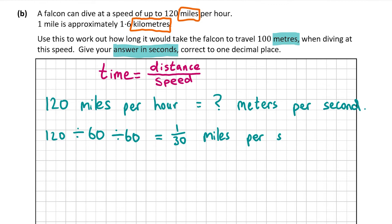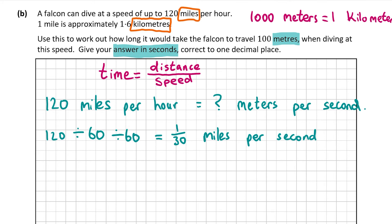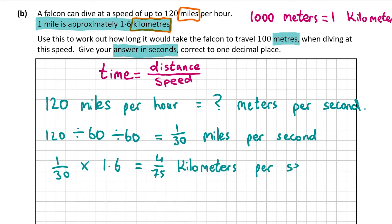So 120 miles per hour is equivalent to 1/30 miles per second. The distance is in meters, and we're told that one mile equals 1.6 kilometers. It's much easier to convert from kilometers to meters rather than directly from miles to meters. To convert 1/30 miles per second into kilometers per second, I multiply by 1.6: 1/30 × 1.6 = 4/75. So 120 miles per hour equals 4/75 kilometers per second.